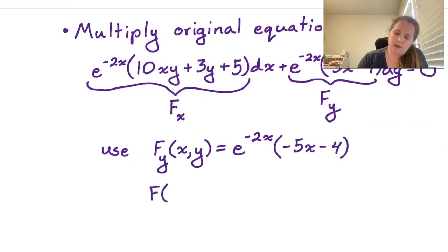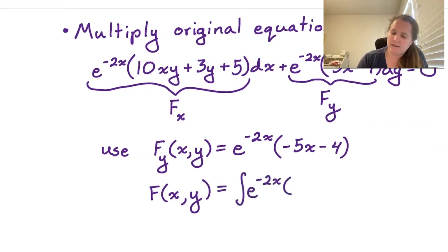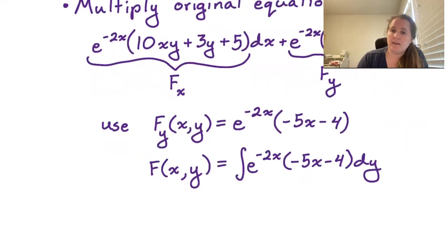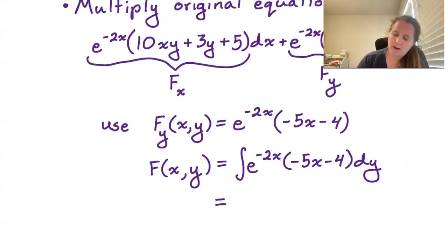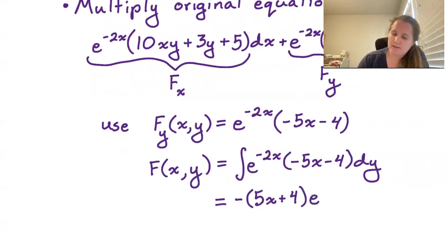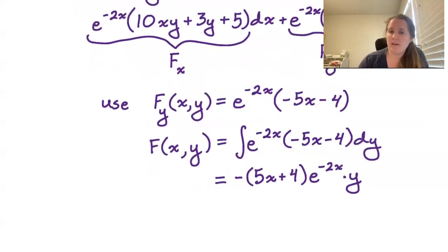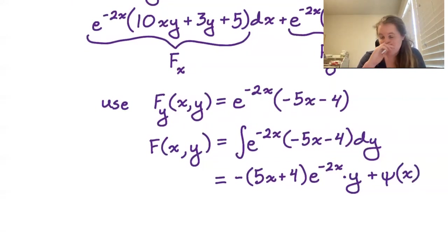So F(x, y) should equal the integral of e^(-2x)(-5x - 4) dy. Since we're integrating a constant with respect to y, y just comes along. This becomes -(5x + 4) e^(-2x) times y. Because we are treating x as a constant, our constant of integration depends on x, so we write plus psi(x).